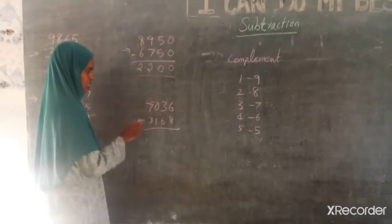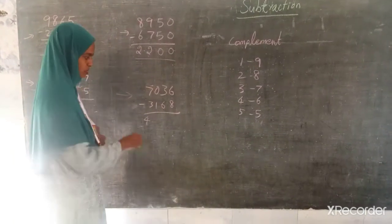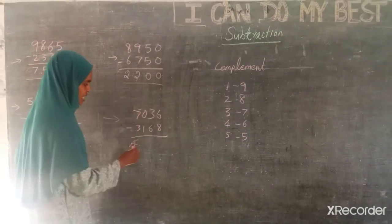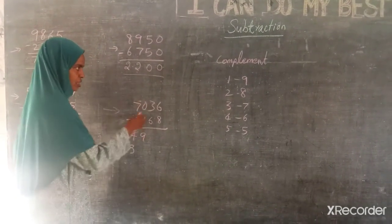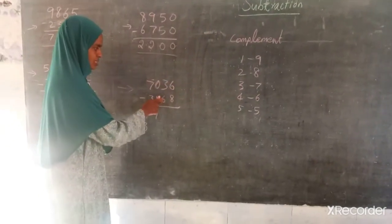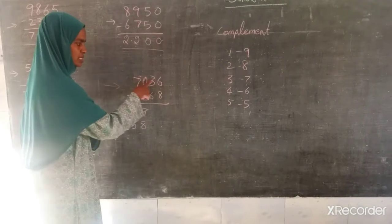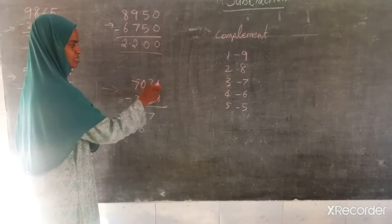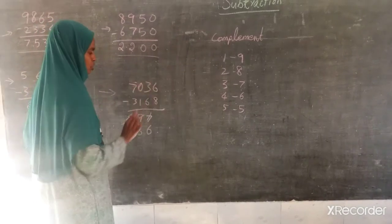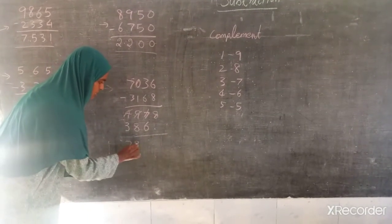Now one more example. 7 minus 3 is 4. Then 0 minus 1 — I can't do it, so I reduce the previous digit by 1, and complement of 1 is 9, so 0 plus 9 is 9. Then 3 minus 6 — I can't do that either, so again I reduce by 1, it becomes 8, and complement of 6 is 4, so 4 plus 3 is 7. Then 6 minus 8 — again reduce by 1, this becomes 6, and complement of 8 is 2, so 2 plus 6 is 8. The answer is 3, 8, 6, 8.